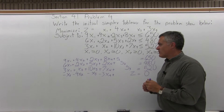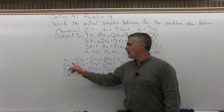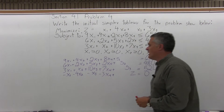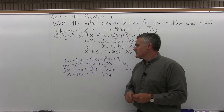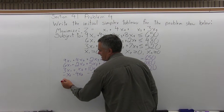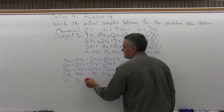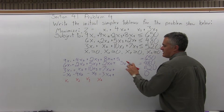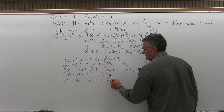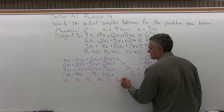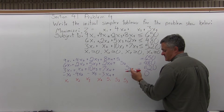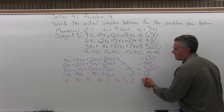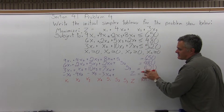Now everything is in equation form with all variables lined up, so I can turn it into a matrix. I'll label the columns — it's not required but is best practice. The columns will be: x1, x2, x3, x4 (no x5 needed), then s1, s2, s3 for the three slack variables, then a z column, and finally the RHS column for the right-hand side value of each equation.